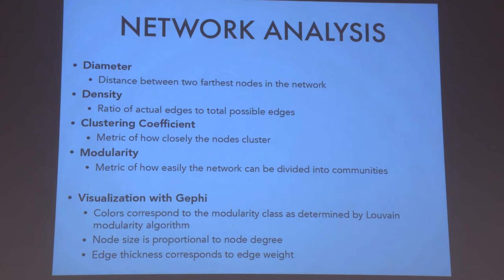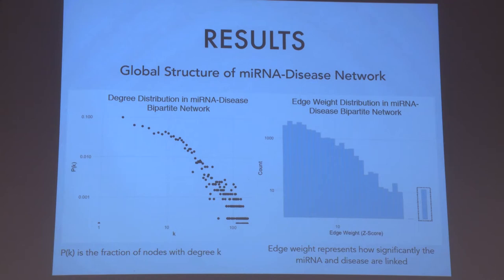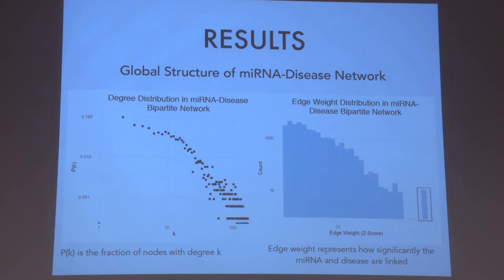Moving on to the results of the micro-RNA bipartite disease network: to gain a sense of clustering — which is important because it tells us what the most important micro-RNA disease modules are — I calculated edge weight and degree distributions. In the degree distribution, you can see that the distribution follows the power law, meaning the network is a scale-free network. This means the network will be characterized by distinctive clustering, which will tell us micro-RNA disease modules. If we look at the edge weight distribution, there is a small minority of edges with a very high weight, indicating a strong micro-RNA disease association.